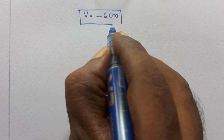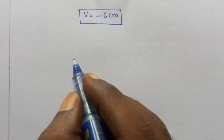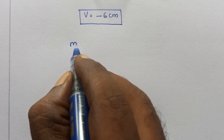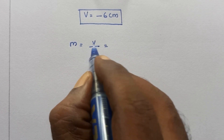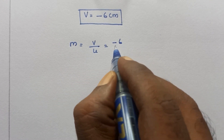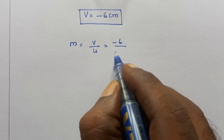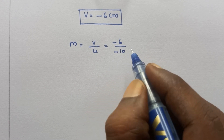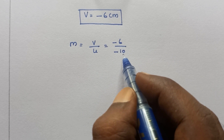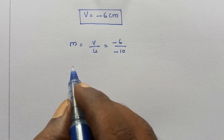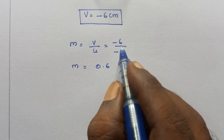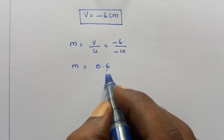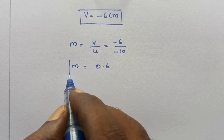Now substituting the value of v in the magnification formula: m equals v by u. V is minus 6 and u is minus 10, so m equals 6 by 10, which is 0.6. So M is equal to 0.6.